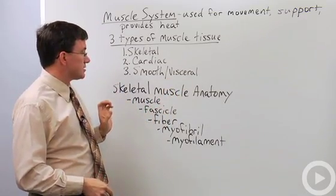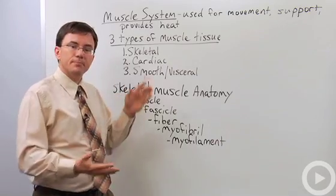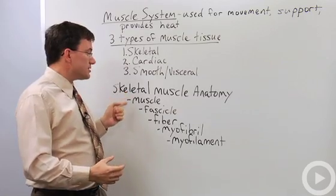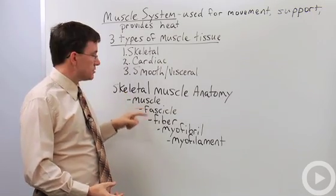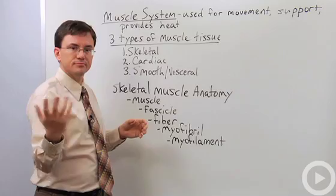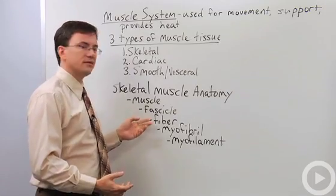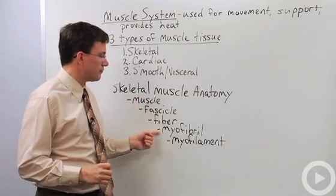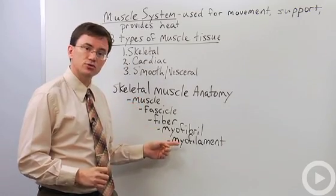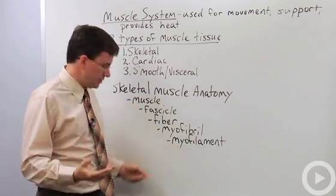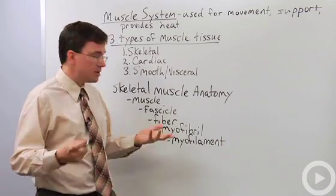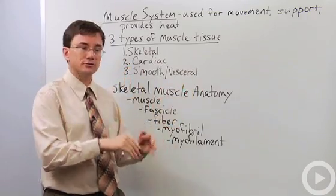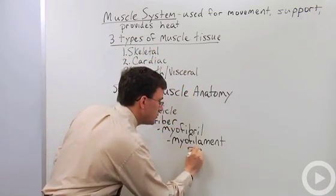Moving on to skeletal muscle anatomy: muscles are made up of multiple layers — bundles of bundles of bundles. A muscle is made up of bundles called fascicles. Each fascicle is made up of muscle cells, which for historical reasons are called muscle fibers. Each muscle fiber is made up of bundles of proteins called myofibrils, and each individual protein is called a myofilament. 'Myo' is a root word meaning muscle. The myofilaments are arranged in repeating patterns — in skeletal and cardiac muscles — called sarcomeres.